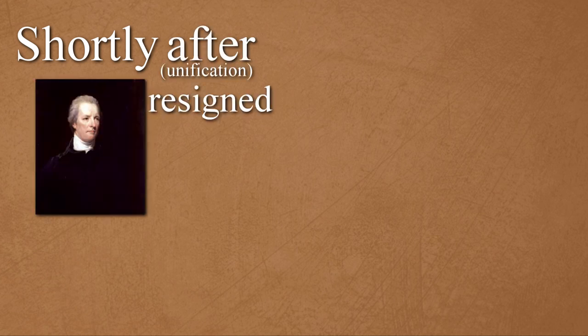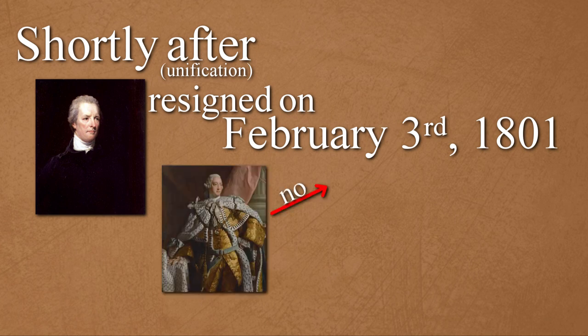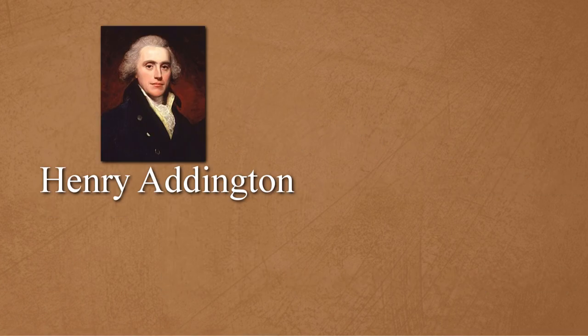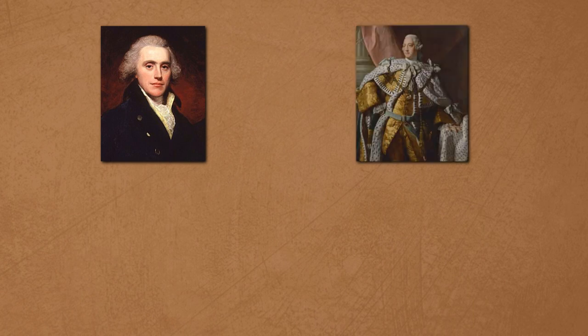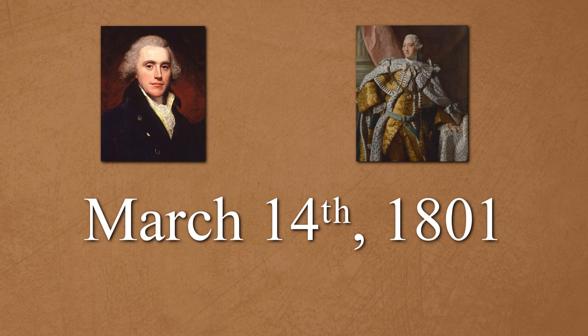Shortly after, Pitt resigned from office on February 3rd, 1801, mainly because George III did not want to grant Catholic emancipation. Pitt's political ally Henry Addington succeeded him as Prime Minister. Addington had to wait to formally take office because George III went insane again, but he soon recovered and officially made Addington Prime Minister on March 14th, 1801.